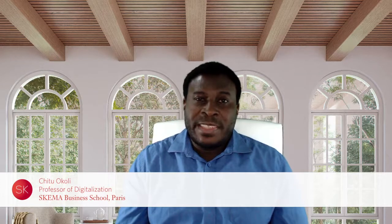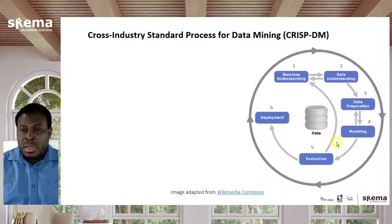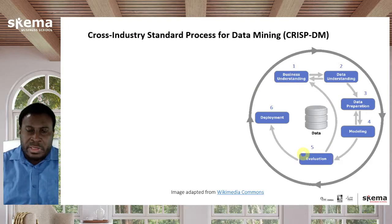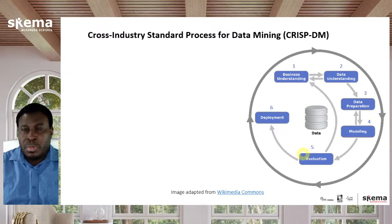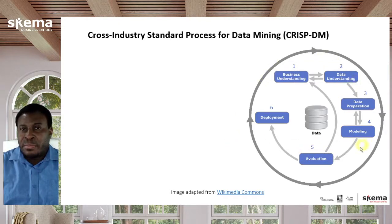In this video, we're going to talk about the cross-industry standard process for data mining, or CRISP-DM. There are lots of different approaches to data mining and different processes, but this is one of the most popular ones, widely used in many different organizations. It divides the data mining process into six major steps.